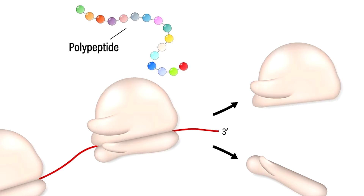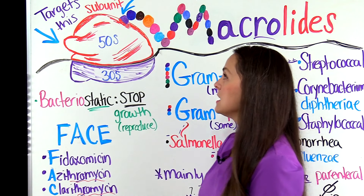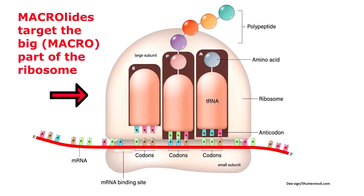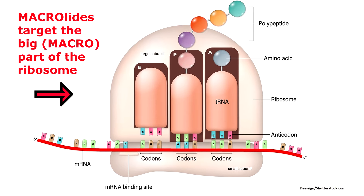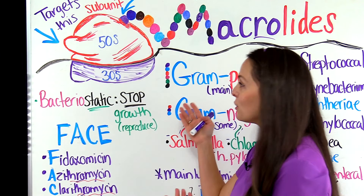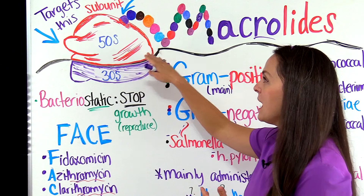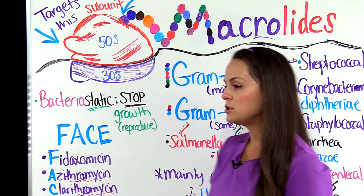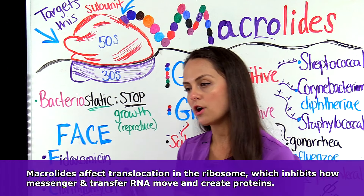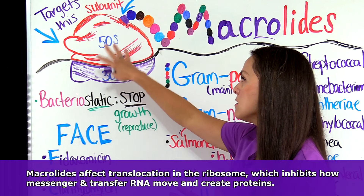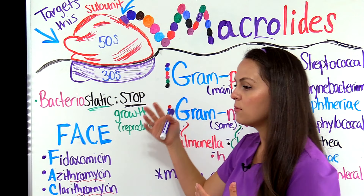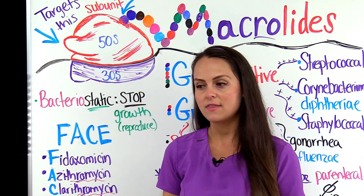The macrolides affect this process by targeting the big part of the ribosome, 50S. Remember — macro means big, so it targets the bigger subunit of the ribosome, which is known as 50S; the number 50 is larger than 30. Whenever it targets this subunit, it's going to affect translocation — inhibiting how messenger RNA and transfer RNA can move within the ribosome to create the protein. When we do that, we affect the growth and reproduction of our bacteria, which is what we want to do to get rid of the infection.